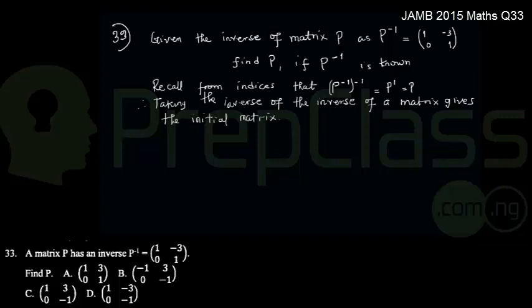So therefore, we could say matrix P would be equal to the inverse of the inverse of its own matrix, that is P inverse.